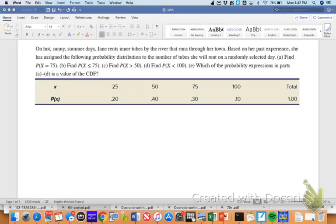Apparently Jane rents inner tubes and based on her past experience, she has assigned the following probability distribution to the number of tubes she will rent randomly on a selected day. So the first question is asking us in part a to find P(X = 75), so the probability that X is going to equal 75.